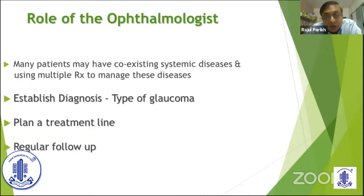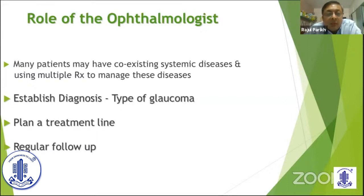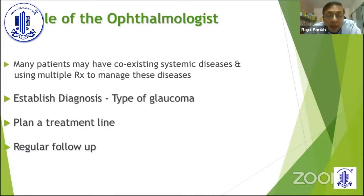As an ophthalmologist — I am not talking about glaucoma specialists, but all of us as ophthalmologists — it is our job to make sure that we diagnose glaucoma and the type of glaucoma. As I said, it is a multifactorial disease with various types and subtypes. We diagnose the exact type of glaucoma, plan the medical treatment, and follow up patients accordingly. At the same time, the majority of our patients have co-existing systemic disease and may be on multiple systemic medications which can affect glaucoma diagnosis as well as the management plan.